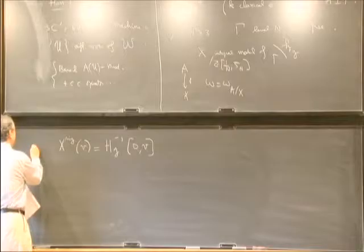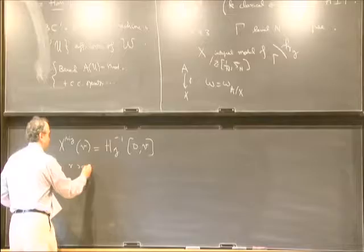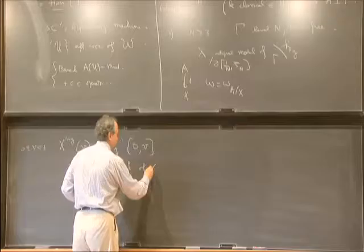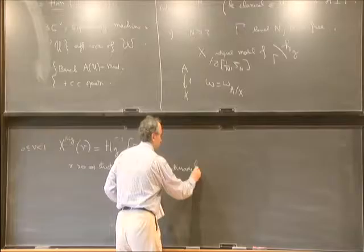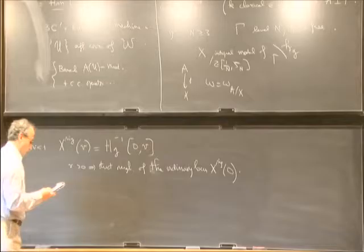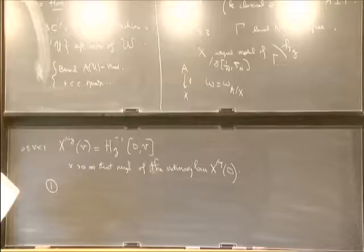We can define neighborhoods of the ordinary locus as the inverse image of intervals [0,v] for any v. If v is positive, this is a strict neighborhood of the ordinary locus X_rig(0).